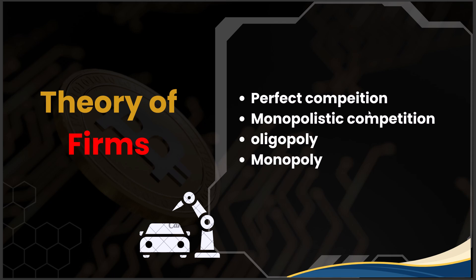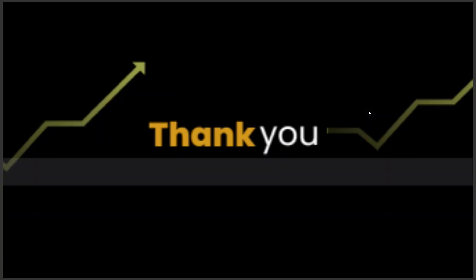Monopoly is when a single producer dominates the market. It may arise due to statutory or government ownership. In monopoly, the producer sets its own price and government regulation is common to control monopoly power. This concept is seen in socialist countries like China and North Korea where the government controls pricing. That concludes today's lecture on the basics of microeconomics — do like, share, and subscribe to the channel.